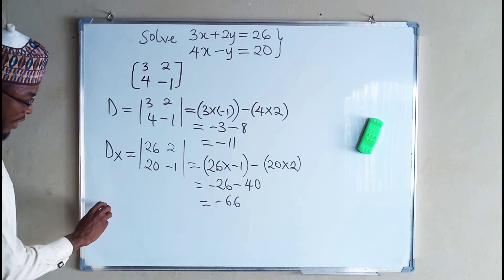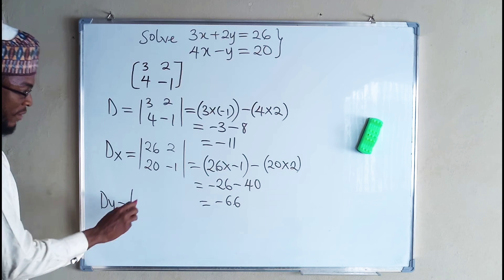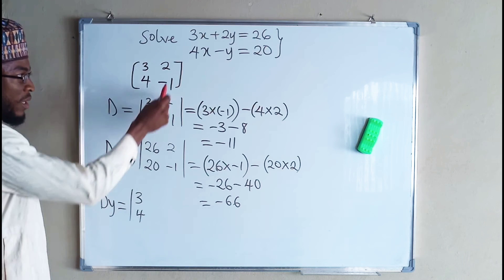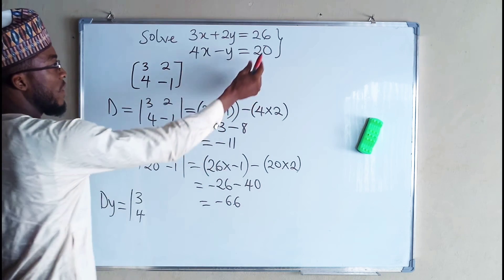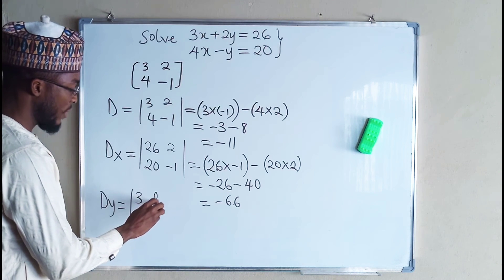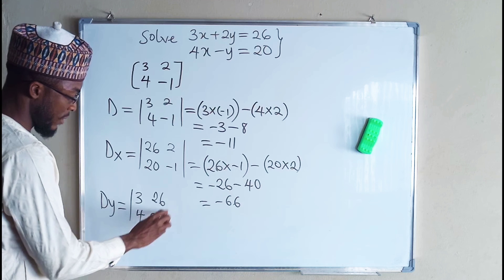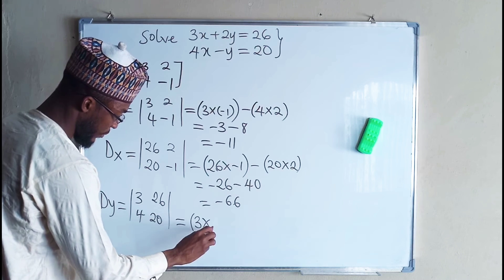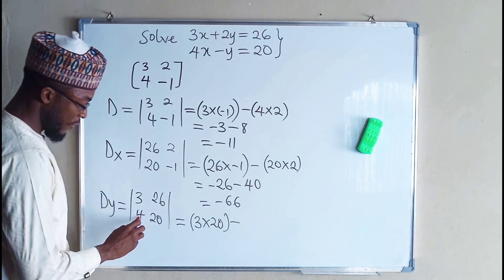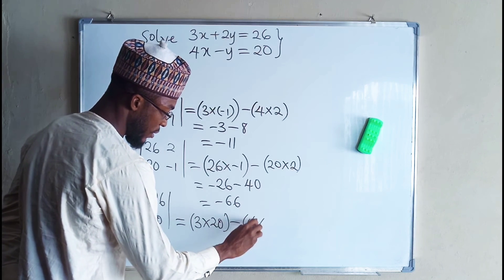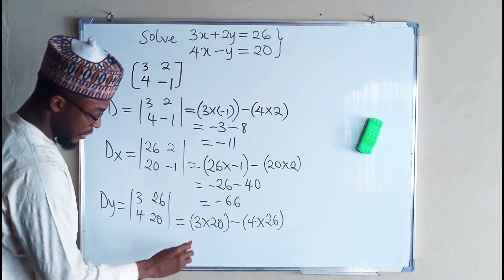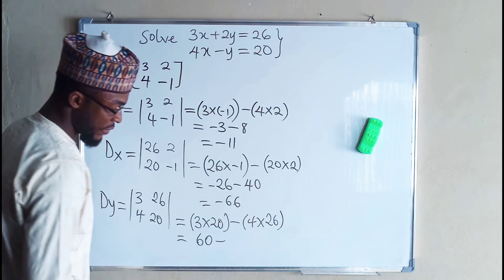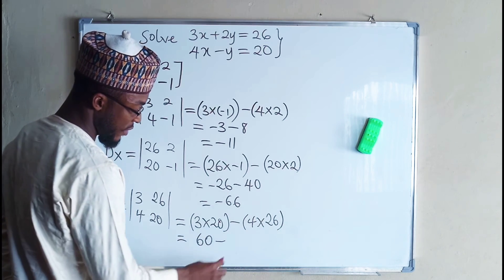Next, find the determinant with respect to y. You keep the coefficients of x constant — 3 and 4 — and replace the coefficients of y with the constant terms 26 and 20. This gives us 3 times 20, minus 4 times 26, which is 60 minus 104, equaling negative 44.